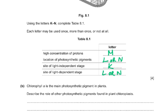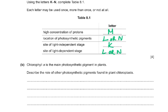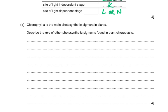Chlorophyll a is the main photosynthetic pigment in plants. Describe the role of other photosynthetic pigments found in plant chloroplasts — that is four marks. Chlorophyll a is the primary pigment. The other pigments — chlorophyll b, carotene, or xanthophyll — act as accessory pigments. They absorb light and pass the energy on to chlorophyll a. These absorb different wavelengths of light which are not absorbed by chlorophyll a.